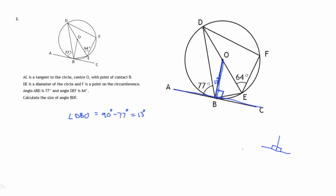Now let's look at this triangle outlined in red. In this triangle, OD is a radius and OB is a radius. As soon as you have two sides of a triangle being equal, you have an isosceles triangle. That means angle BDO is also 13 degrees — because triangle DBO is isosceles.